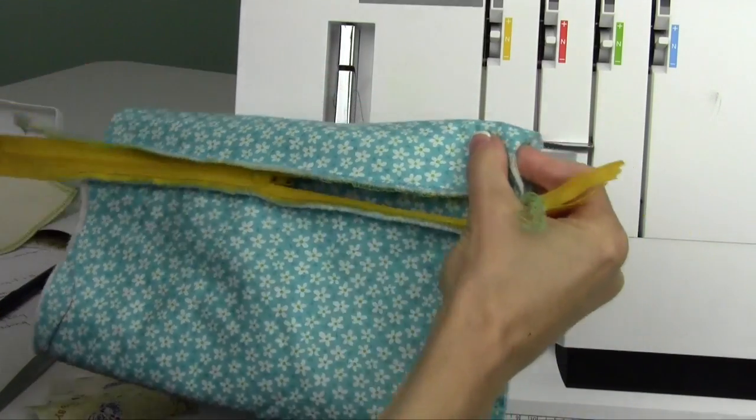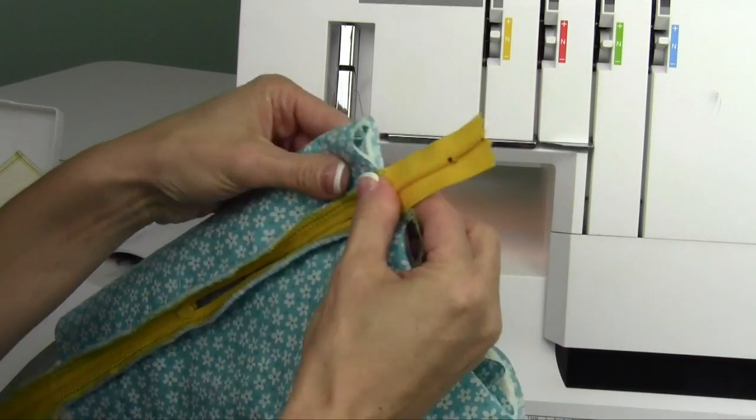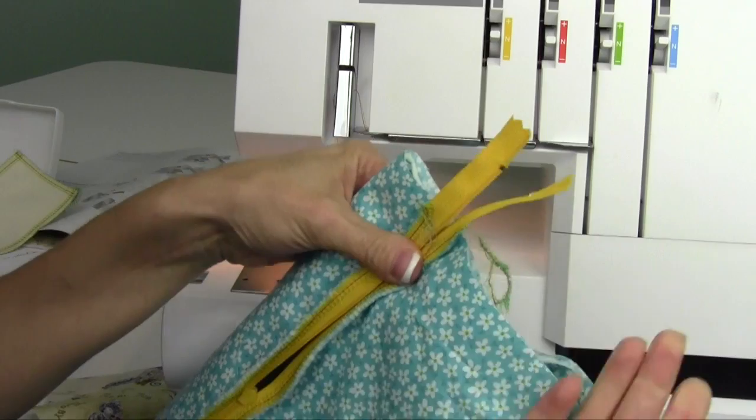Now we're going to do the side seams. We're going to roll this down about an inch, and then we're going to just tuck the two open parts together here. I'm going to kind of hold them, but now we're going through two layers of batting, four layers of fabric, and a zipper.